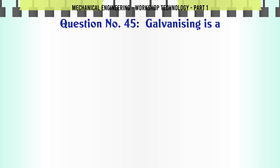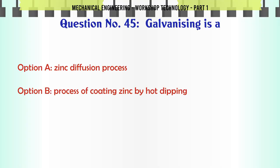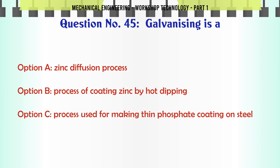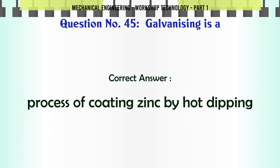Galvanizing is: A. Zinc diffusion process. B. Process of coating zinc by hot dipping. C. Process used for making thin phosphate coating on steel. D. None of the above. The correct answer is: Process of coating zinc by hot dipping.